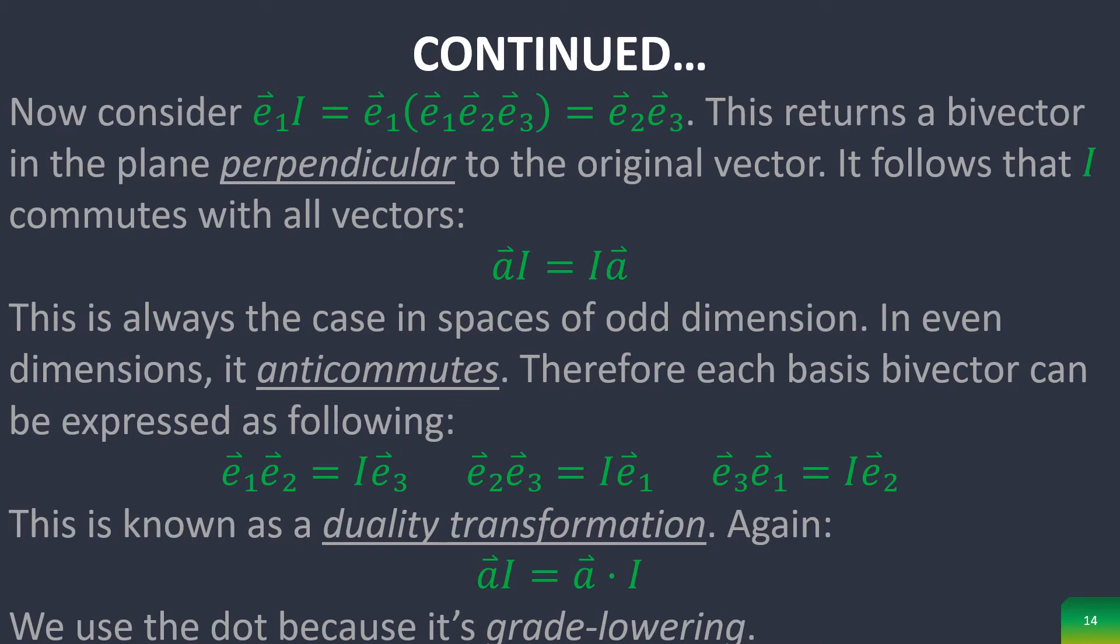Therefore, in three dimensions, we can express each basis bivector in the following form, which is known as a duality transformation. And that is something that Grassmann proposed. Again, we denote this with a dot because it's grade lowering.